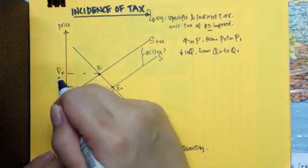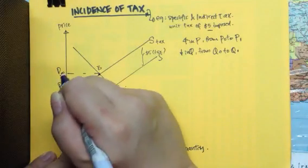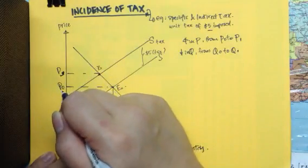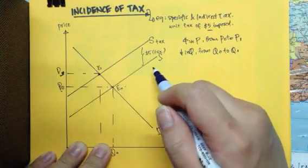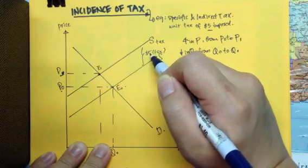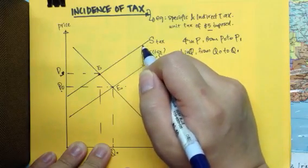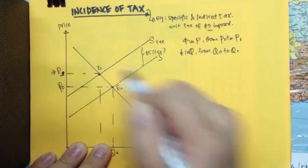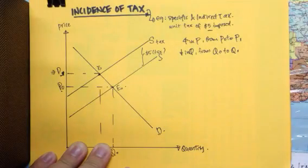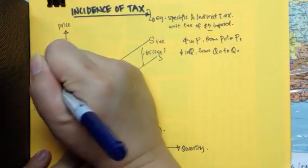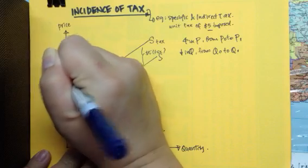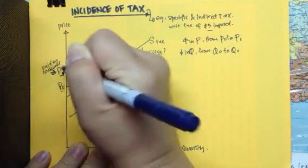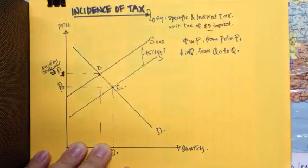So what is exactly P0? Previously, the consumer will pay a price of P0. But because of the imposition of the tax, there is an increase in the supply curve. So therefore, P1 will be the price paid by the consumer at P1.